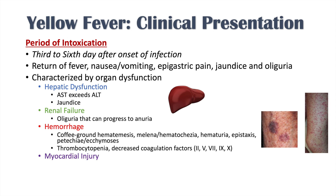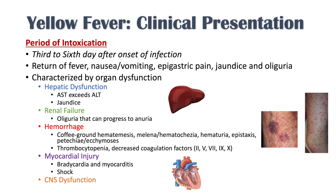You can also see myocardial injury. Individuals with yellow fever can have bradycardia, myocarditis, and eventual shock. There can also be CNS dysfunction causing delirium, agitation, and convulsions. So in the period of intoxication, the symptoms can be quite devastating.